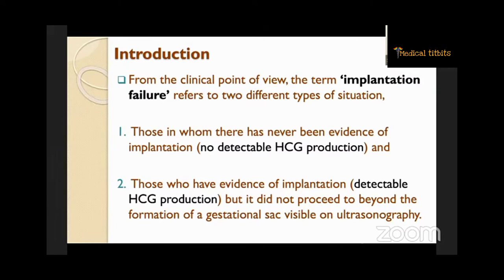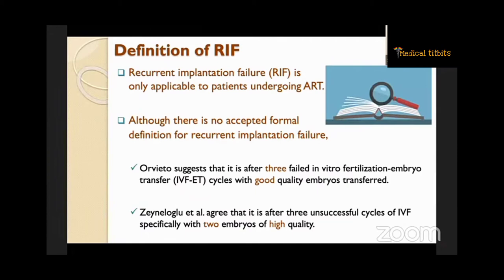What is the definition? Recurrent implantation failure is only applicable to patients undergoing IVF. Although there is no accepted formal definition for recurrent implantation failure, ESHRE suggests that it is after three failed in-vitro fertilization embryo transfer cycles with good quality embryos transferred. Jainerogu et al. agree that it is after three unsuccessful cycles of IVF, specifically with two embryos of high quality.